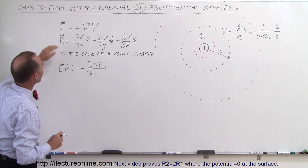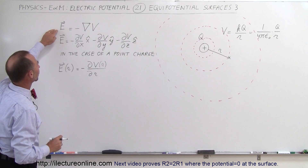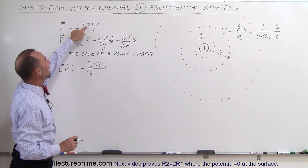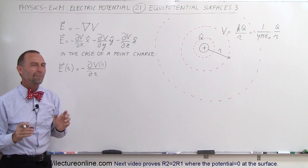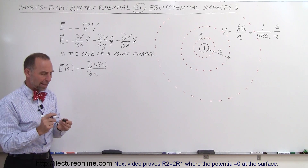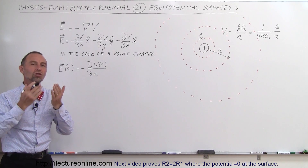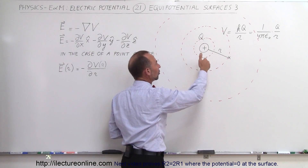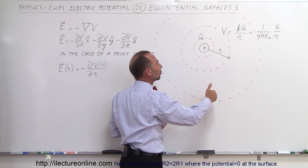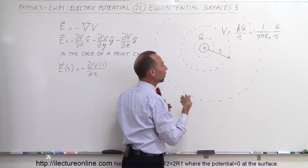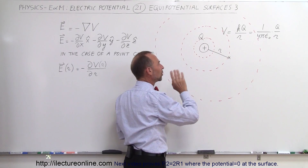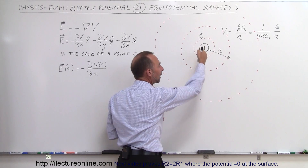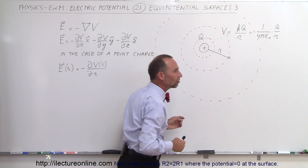The electric field is equal to the negative gradient of the potential. The gradient represents the change in the potential, so as the potential diminishes, the electric field also changes. There is a relationship between the strength of the electric field and how the potential changes.